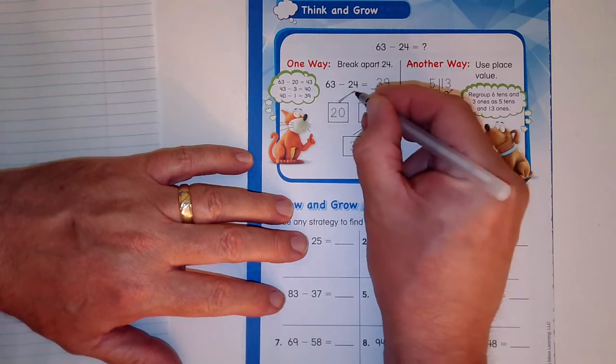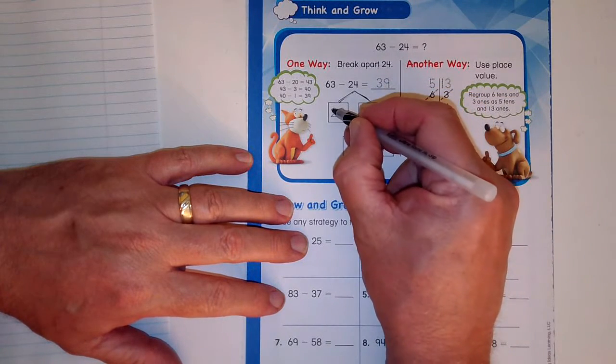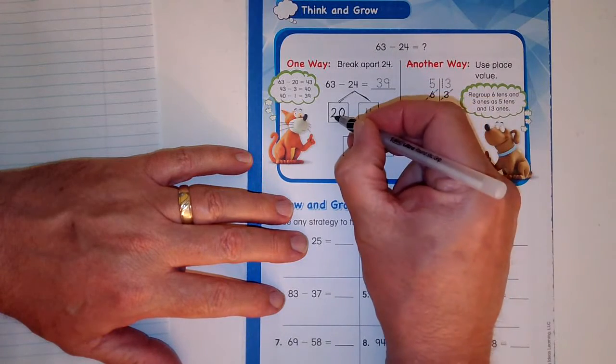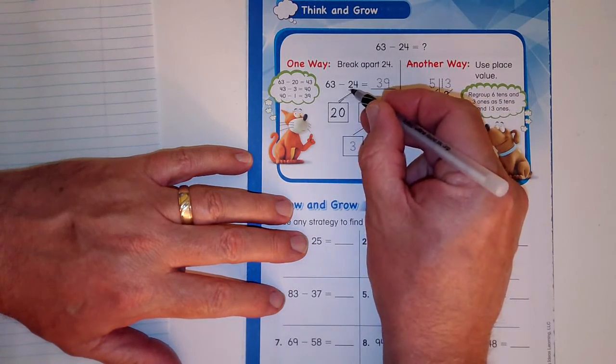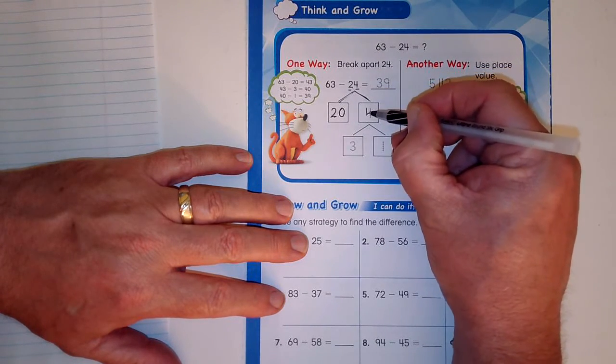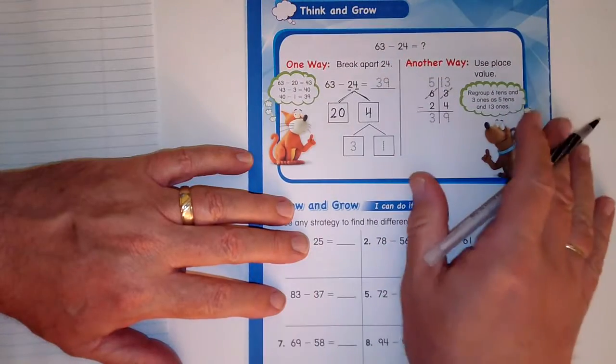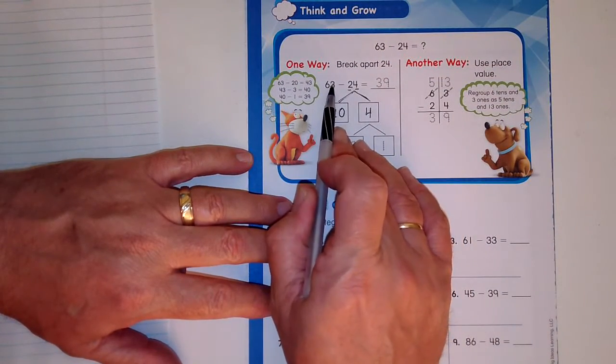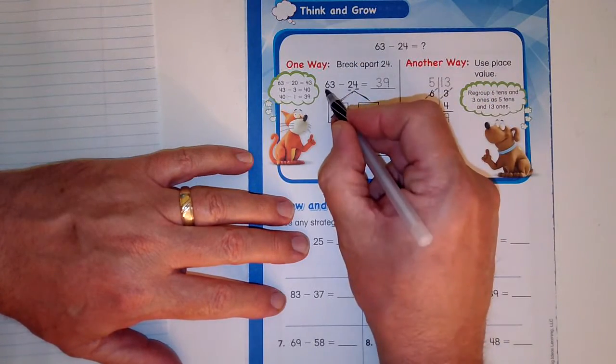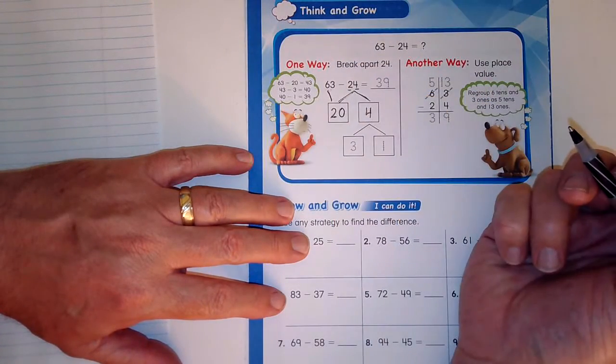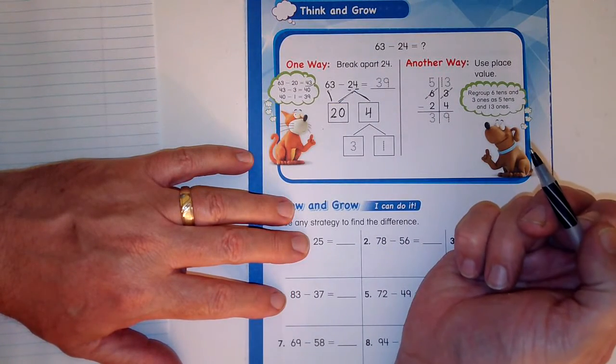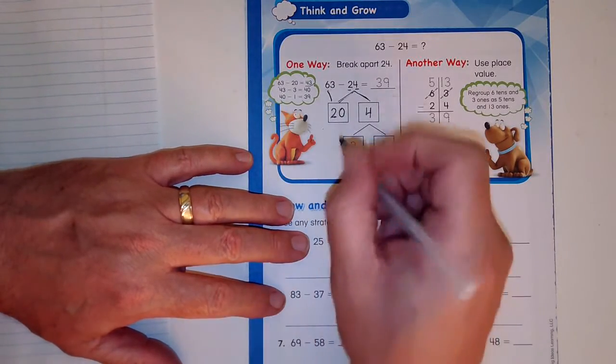So let's take a look at 63 minus 24. We know that we can break apart these numbers like this. If I want to take away just the tens, then I have 20 over here. The tens is 20, and that means I have 4 over here. You're with me so far? 63 minus the 20 just takes two of the tens away. 63 minus 20 equals 43, but we're not done.